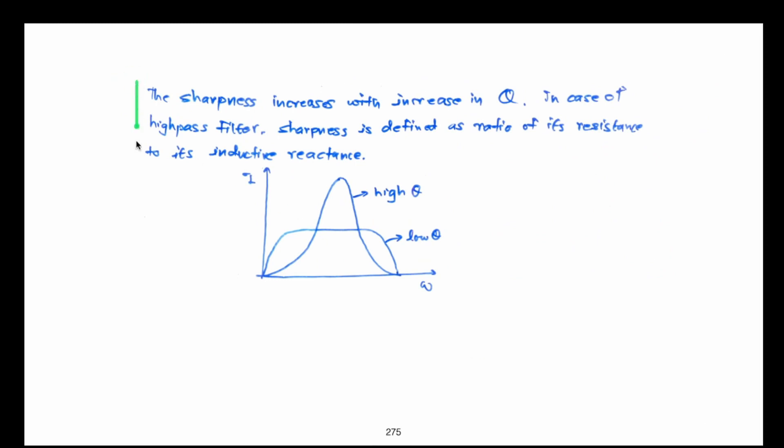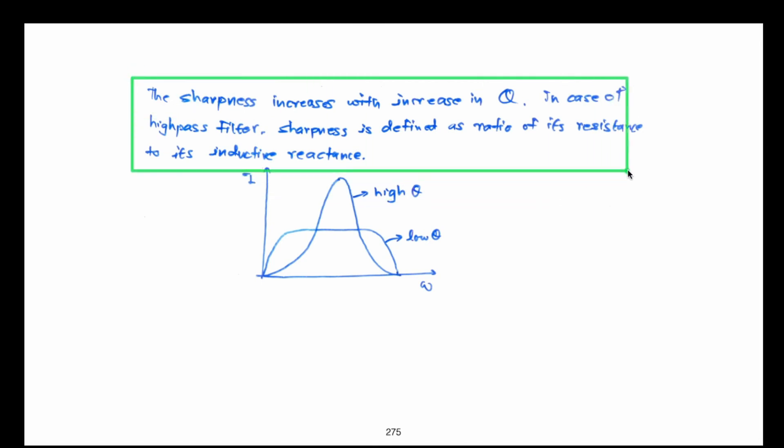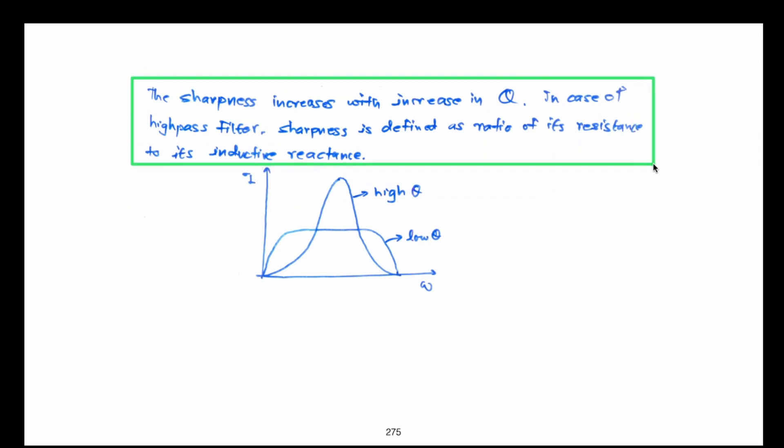The sharpness of tuning increases with the increase in the value of Q factor — the larger the Q factor, the greater the selectivity. For high-pass filters, the Q factor is defined differently: it is the ratio of resistance to inductive reactance, exactly the reverse of a single-tuned filter, because high-pass filters pass all frequencies above a certain cutoff frequency.